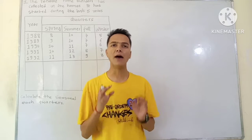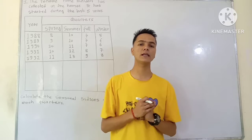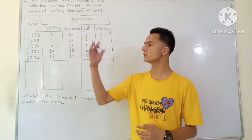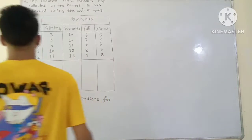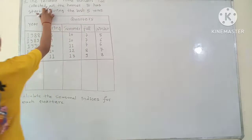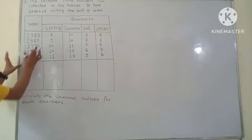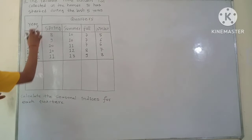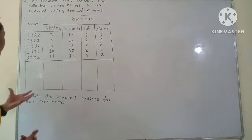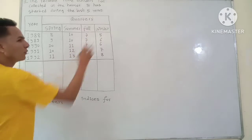In seasonal index, looking at the first question, the Reliable Home Builders has collected data on the homes it has started during the last five years. We have been given five years of data — from year 1988 to 1992 — and the data is given in quarters: Spring, Summer, Fall, and Winter.